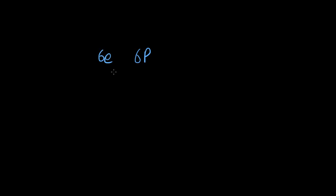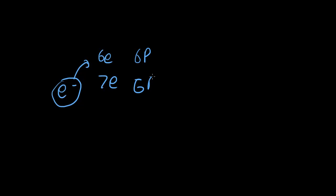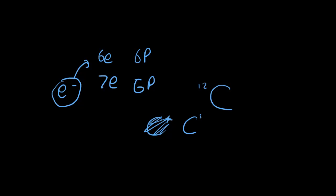For example, carbon usually has six electrons and six protons. If we were to add an electron so we had seven electrons and still six protons, this carbon atom would have a charge — it would be C with a charge of one minus, so it actually has an extra negative charge.